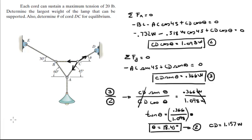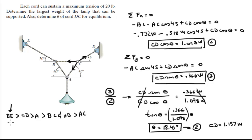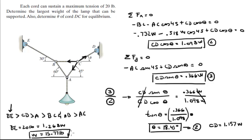Now that we have all the tensions, let's sort them from biggest to smallest. BE is the biggest, then CD, then the full string from top to bottom, then BC, then AB, and the one that holds the least weight is AC. Since the maximum tension is 20 pounds, we set the maximum to the tension that holds the most, which is BE. So if BE equals 20 pounds, and BE equals 1.268 times the weight, then dividing 20 by 1.268 gives us a weight of 15.77 pounds. That is the maximum weight the lamp can be for the system to work without any cord failing at 20 pounds.